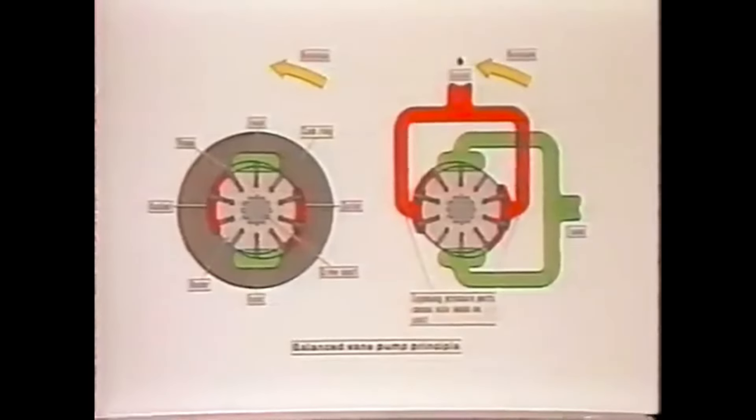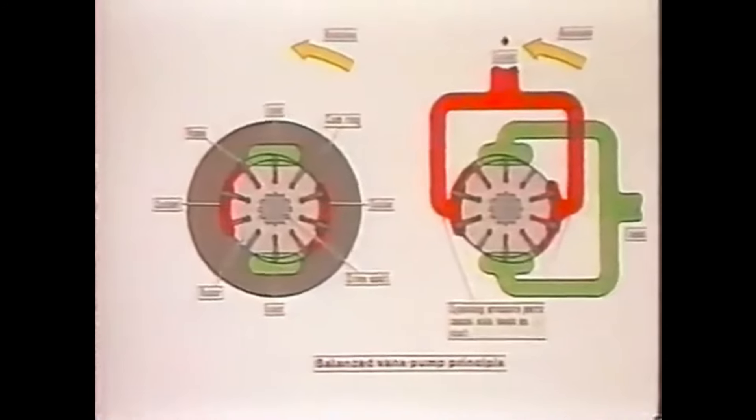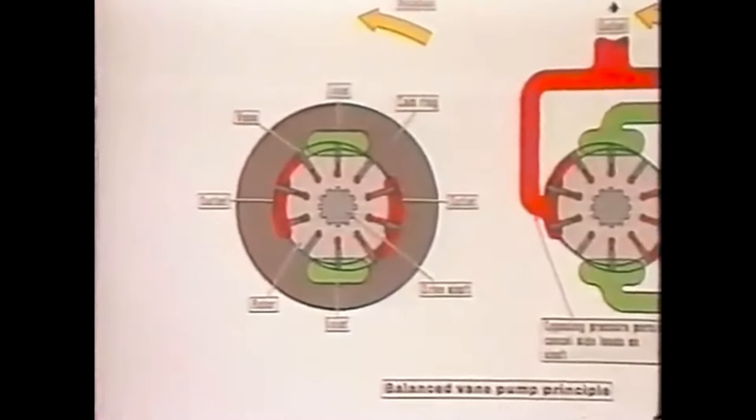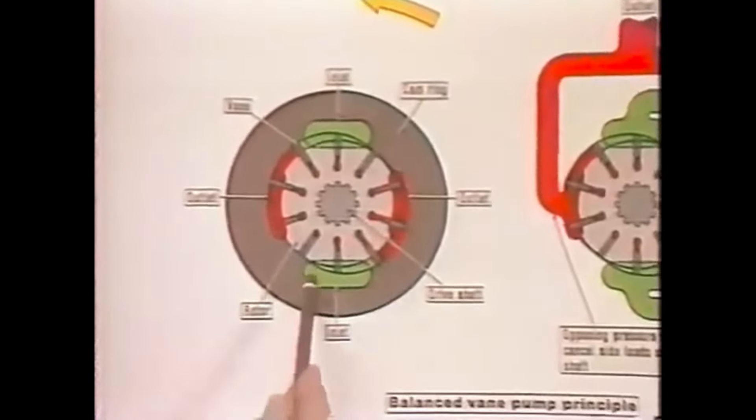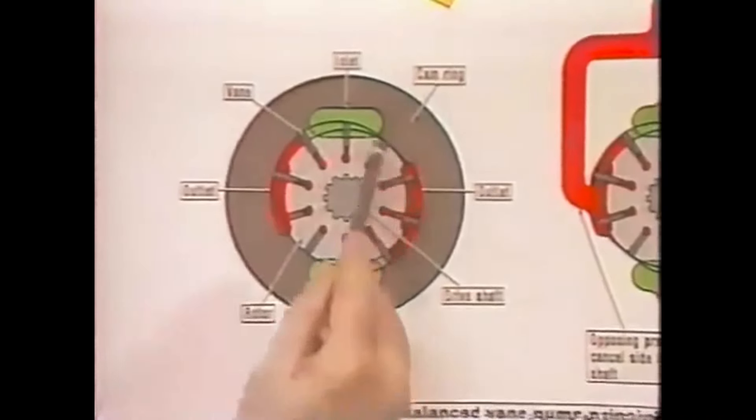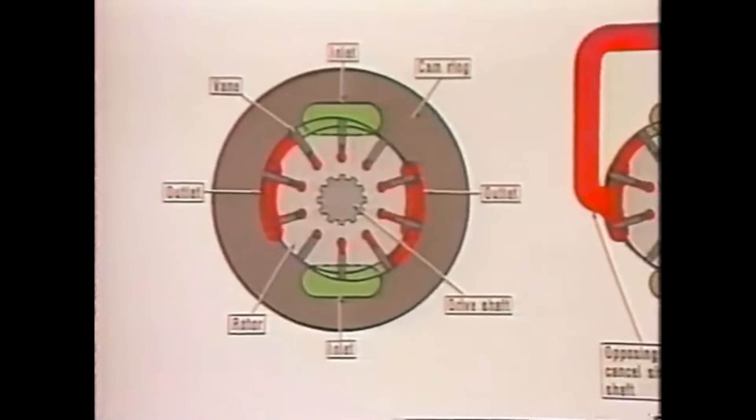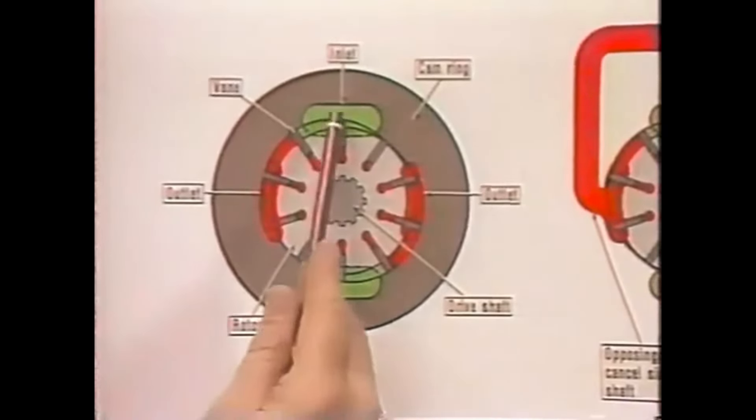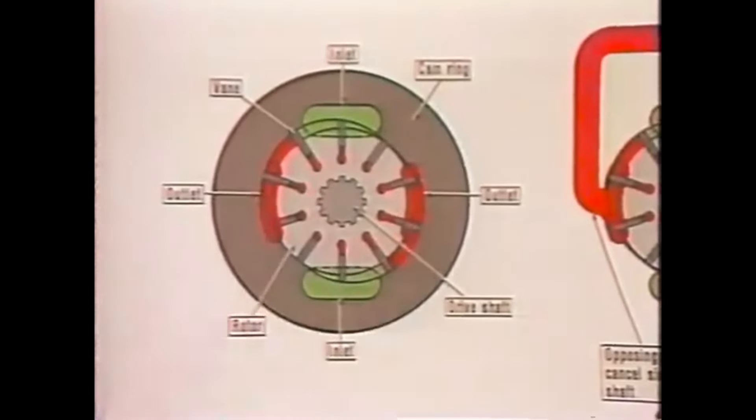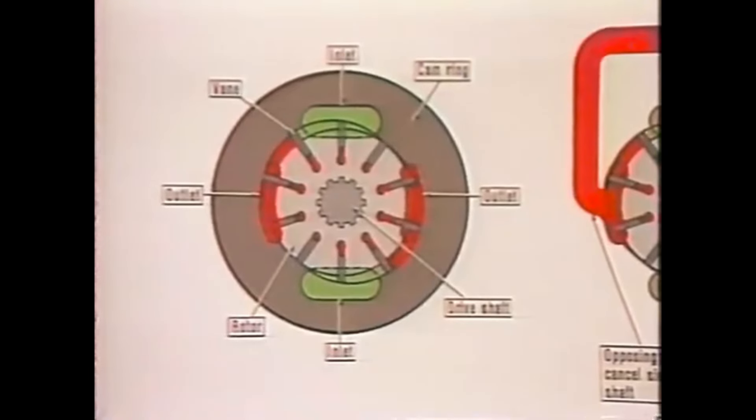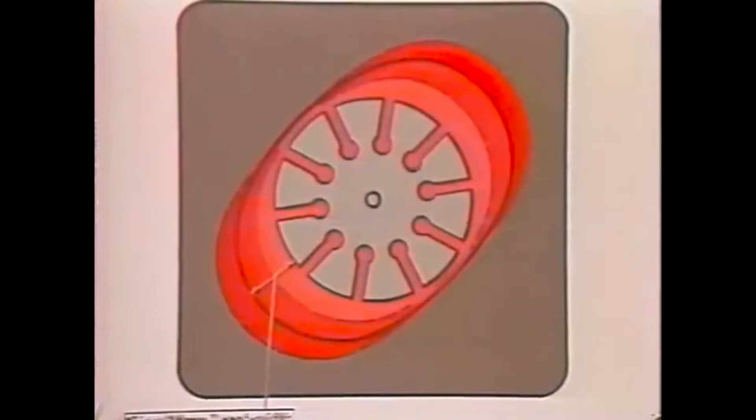Now, a balanced vane pump operates in the same manner as an unbalanced unit, the difference being that the inner contour of the ring is an ellipse rather than a circle. This configuration forms two sets of pumping chambers. They're on opposite sides of the rotor but are interconnected through passages within the housing. Forces caused by pressure buildup on one side are canceled out by equal but opposite forces on the other. The displacement of a balanced design vane pump cannot be adjusted.